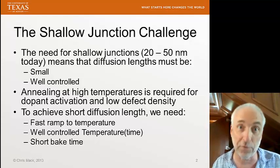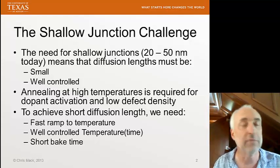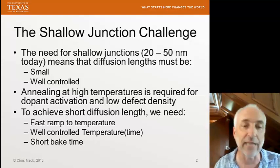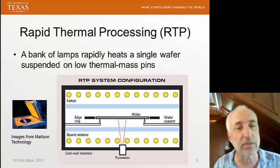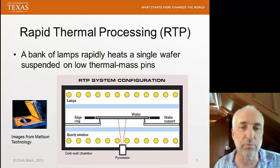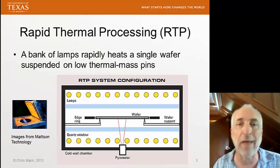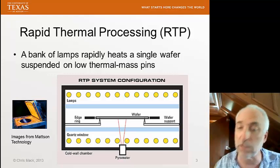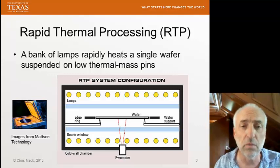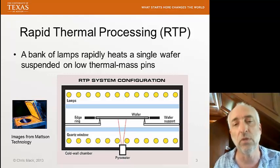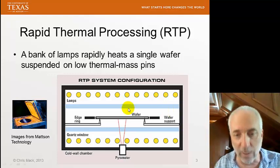We can't do it in a furnace — furnaces take tens of minutes to hours to go through a cycle up to high temperature. Instead, we use a technology called rapid thermal processing. Here's a prototype diagram of a rapid thermal processing system. We use a bank of lamps to use optical energy to rapidly heat one wafer at a time.